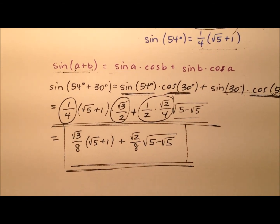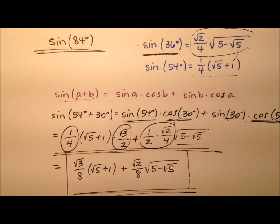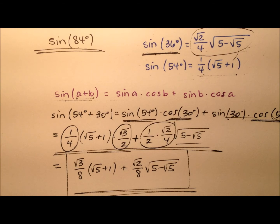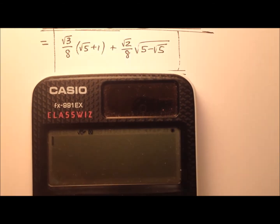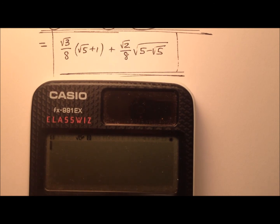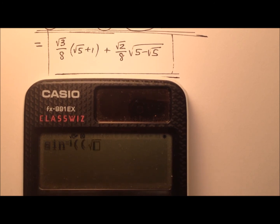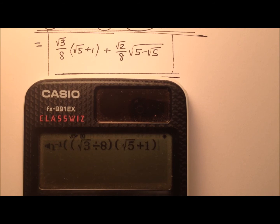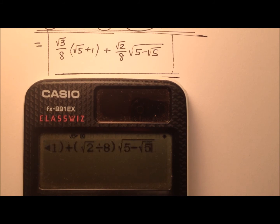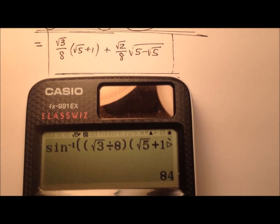So we have the exact value for the sine of 84 degrees. Let's grab a calculator and verify this. Starting with inverse sine, we'll put in the expression: square root of 3 divided by 8, multiplied by the square root of 5 plus 1, plus the square root of 2 divided by 8, multiplied by that radical expression — which has a minus sign in it. Close up all the parentheses, and we get 84 degrees. So this worked.